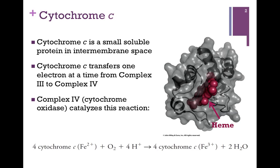Complex 4 is the last component in our system. It is called cytochrome oxidase because its job is to oxidize cytochrome C. It catalyzes the reaction at the bottom of the screen here. It's going to oxidize cytochrome C from iron 2 to iron 3...